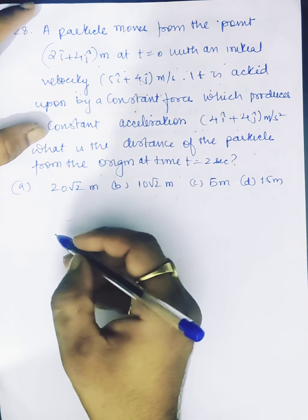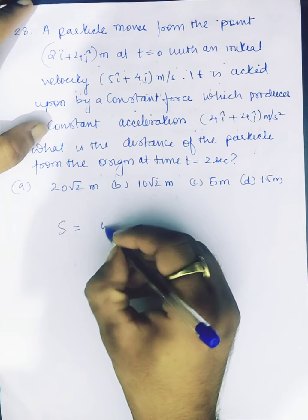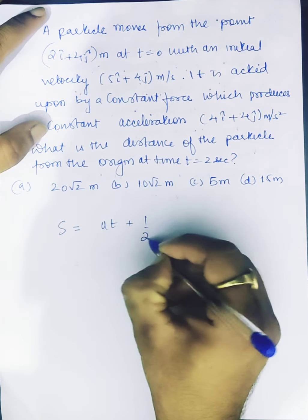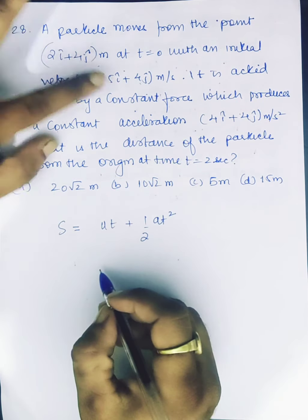So the distance, let's remove the distance s is equal to ut plus half a t square. u, how much is initially?